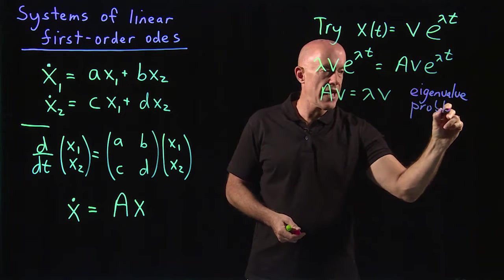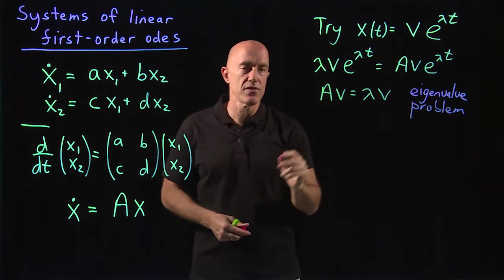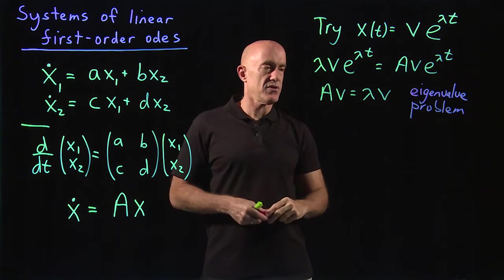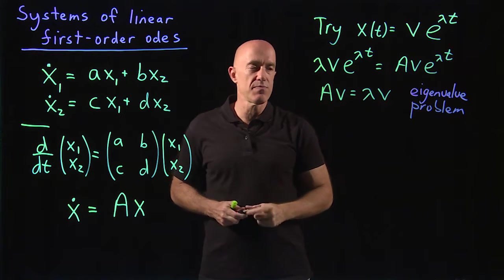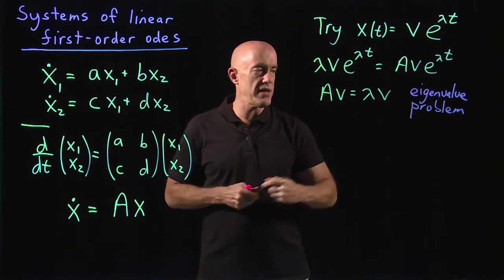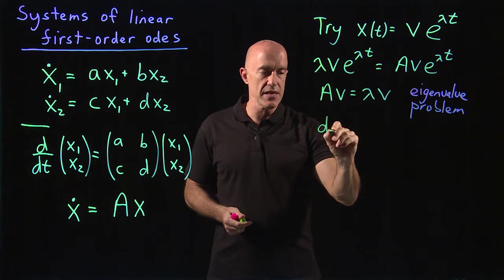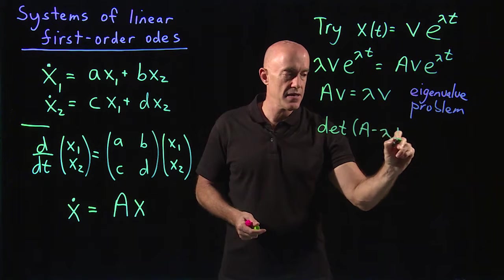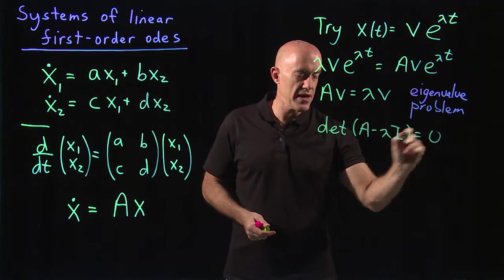So lambda are the eigenvalues of the matrix A, and v are the eigenvectors. How do you compute the eigenvalues? You use the characteristic equation, which is the determinant of A minus lambda I equals 0.